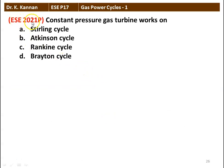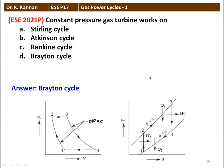The next question from the 2021 question paper: a constant pressure gas turbine works on which cycle — Stirling cycle, Atkinson cycle, Rankine cycle, or Beretron cycle? The correct option is the Beretron cycle. The Beretron cycle for constant pressure gas turbine: 1 to 2 reversible adiabatic compression, 2 to 3 constant pressure heat addition, 3 to 4 reversible adiabatic expansion, and 4 to 1 constant pressure heat rejection.